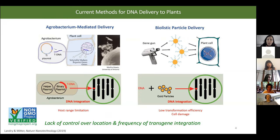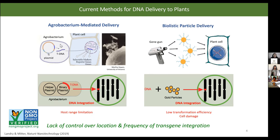Current delivery techniques to plants include agrobacterium-mediated delivery, a pathogenic method that takes advantage of agrobacterium, which has evolved to infect certain plant species. We can genetically modify agrobacterium to carry a gene of interest, and it will then deliver that gene to the plant, integrating it into the host genome. This is a very high efficiency method, but because it is a biotic method, it has a host range limitation and can only deliver DNA as a cargo.